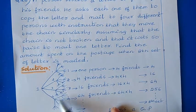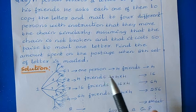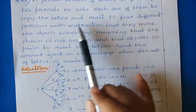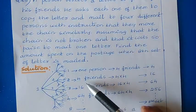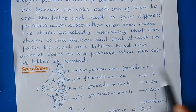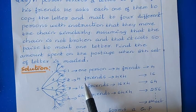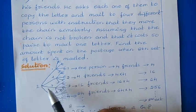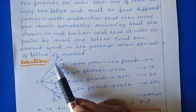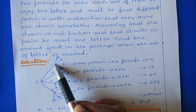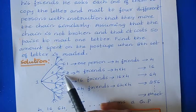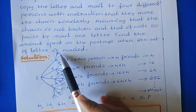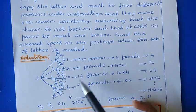The person is writing a letter to 4 of his friends, so there are 4 letters in the first set. Then he asks each one of them to copy the letter and mail to 4 different persons. Those 4 friends again send the letter to 4 of their friends, that means 4 × 4 = 16. Then those 16 friends again send letters to their friends, that is 16 × 4 = 64. Then 64 × 4 = 256. Like this way, the chain is continuing.